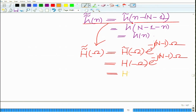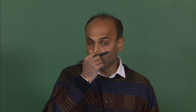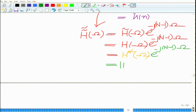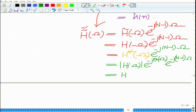Now H(minus ω) equals H*(ω) because h[n] is a real filter — for any real impulse response, h(minus ω) equals h conjugate of ω. So H̃̃(ω) equals the magnitude |H(ω)| times e^(minus jθ(ω)) times e^(minus j(N minus 1)ω), and this equals H(ω) from the symmetry property of the filter.